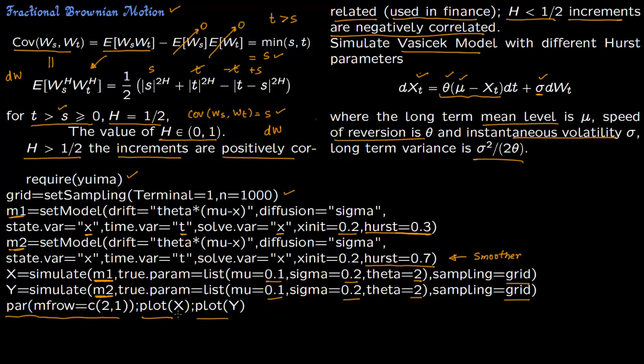So let us now see this in R and see what Hurst parameter produces for two different values 0.3 and 0.7. We know for 0.5, it just simulates the regular Vasicek model which we have done before. So you do not have to specify 0.5. If you leave out the Hurst parameter in your code, then the Yuima package would automatically set Hurst as 0.5. So let us see this in R.